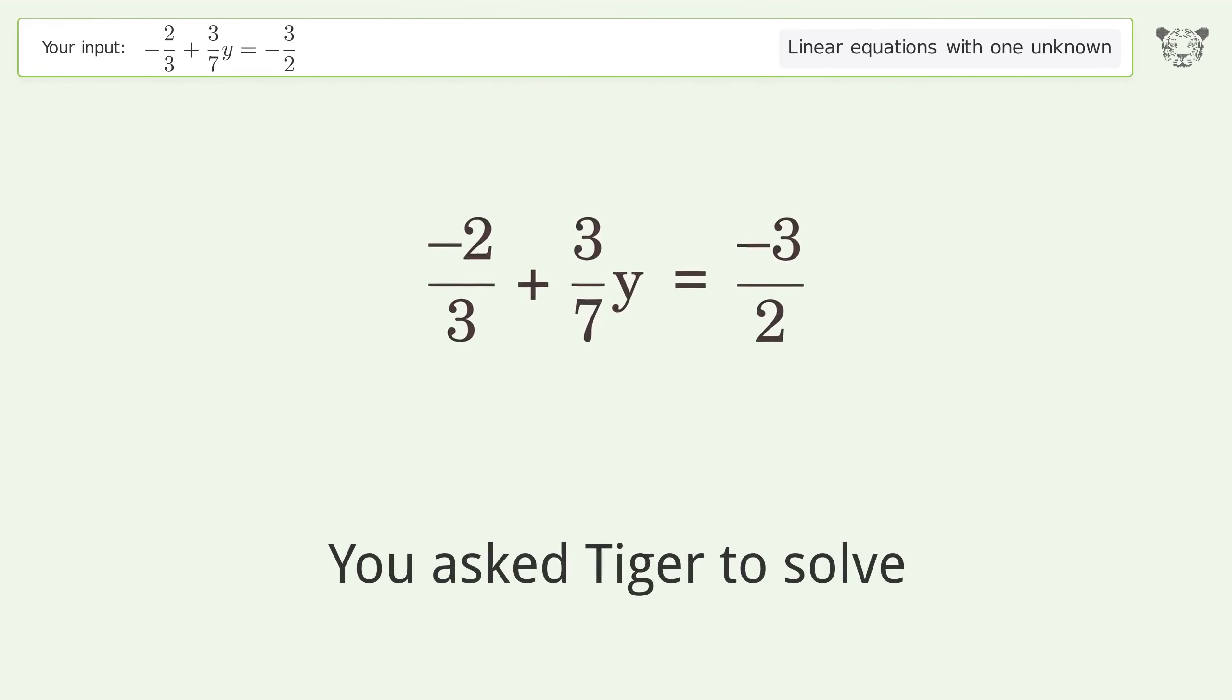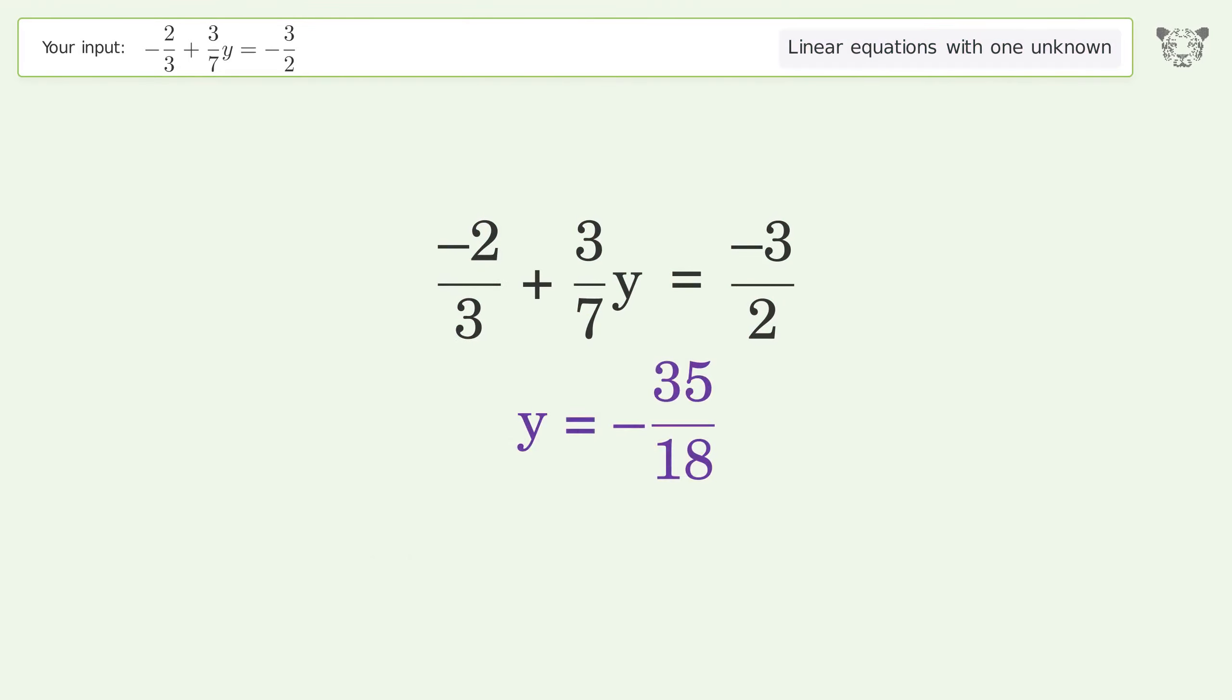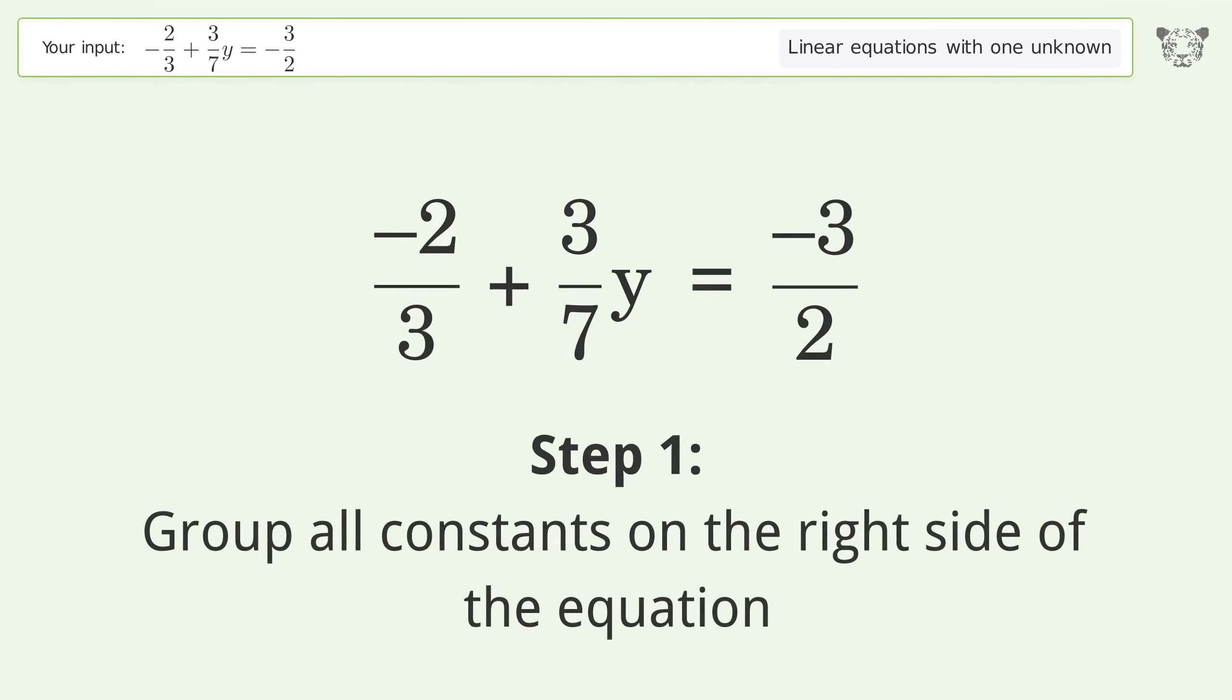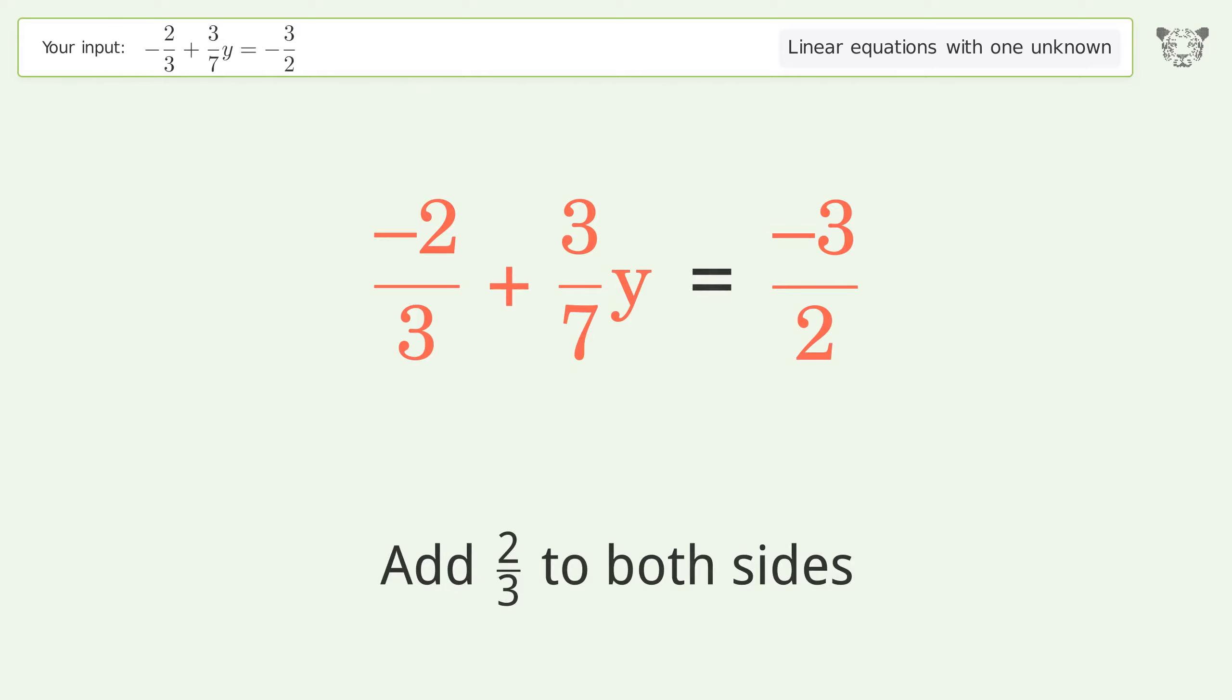You asked Tiger to solve this. It deals with linear equations with one unknown. The final result is y equals negative 35 over 18. Let's solve it step by step. Group all constants on the right side of the equation. Add 2 over 3 to both sides.